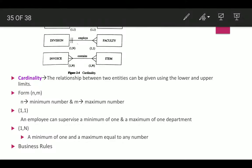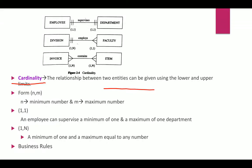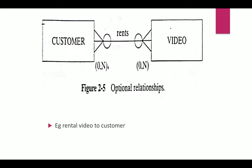Next comes the concept of cardinality. Cardinality is used to show the relationship between two entities by giving the lower and upper limit. The notation is (n, m), where n is the minimum number and m is the maximum number. This concept is applied in the form of a business rule.